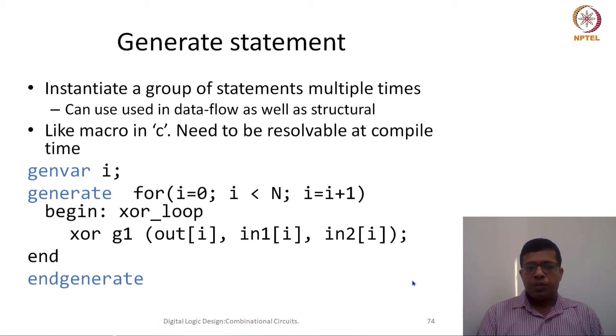Whenever we are using this generate statement, there would be two constructs which are important. One is genvar. Genvar is the variable which would be the loop iterator. There would be a generate statement and within the generate statement usually there would be a for loop. In this for loop I can say for i equal to 0, i less than N, i equal to i plus 1. This i is a generate variable. This variable would be fixed wherever in this for loop, and all these instances would be created.